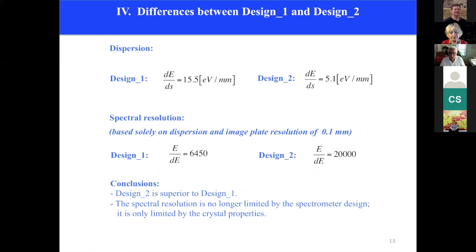And I go to the bottom line. With design two, you also obtain a very high spectral resolution of 20,000, which can practically not be realized. But it means that our spectral resolution is no longer limited by the spectrometer design. It is only limited by crystal properties.